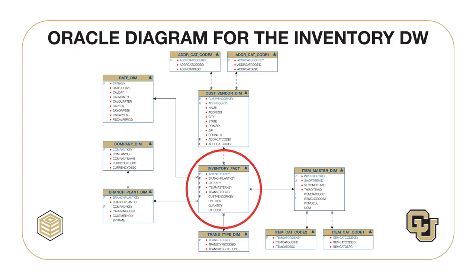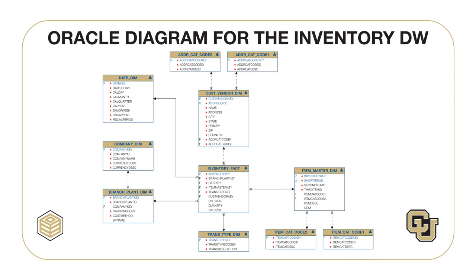The fact table, inventory fact, contains several measures along with relationships to associated dimension tables. Several dimension tables are directly related to the inventory fact table; other dimension tables such as item cat code 1 are indirectly related to the inventory fact table in a snowflake design. The snowflake schema design provides a template that can be customized to individual organizations. Dimension tables such as address cat code 1 allow an organization to customize the design to specific requirements. Data generation procedures create reasonably sized tables for a more realistic usage of the Inventory Data Warehouse in assignments. Before starting on assignments in Modules 2, 3, and 4, you need to create and populate the inventory data warehouse tables. The course website contains files with the create table and insert statements for each table, so you do not need to use the data generation procedures.